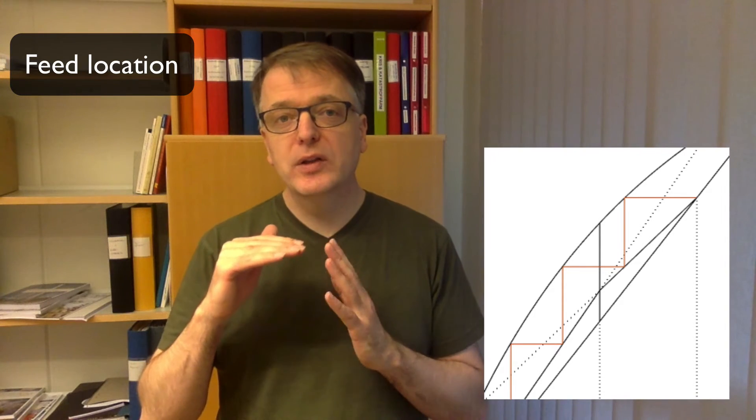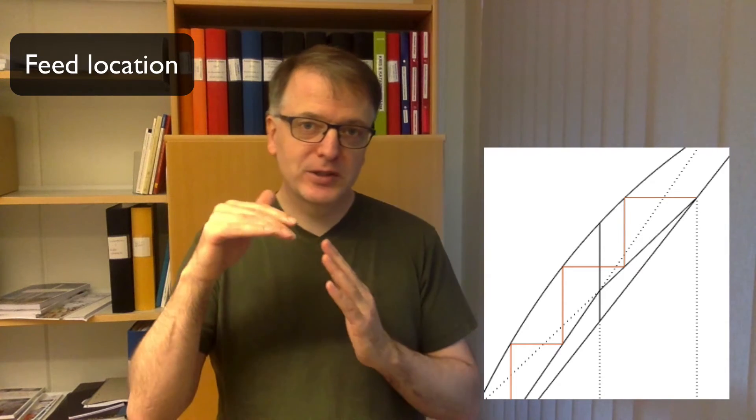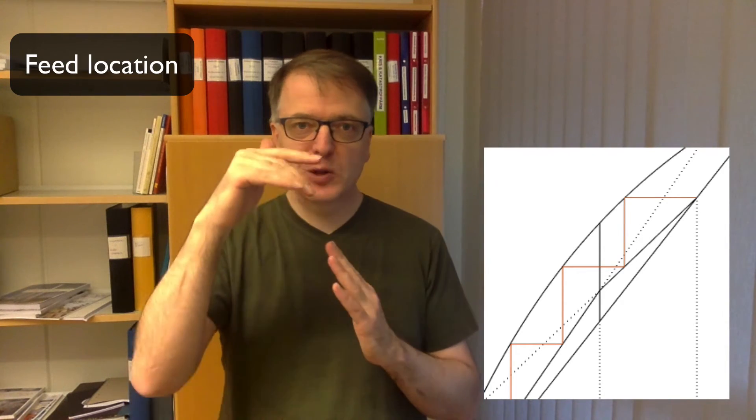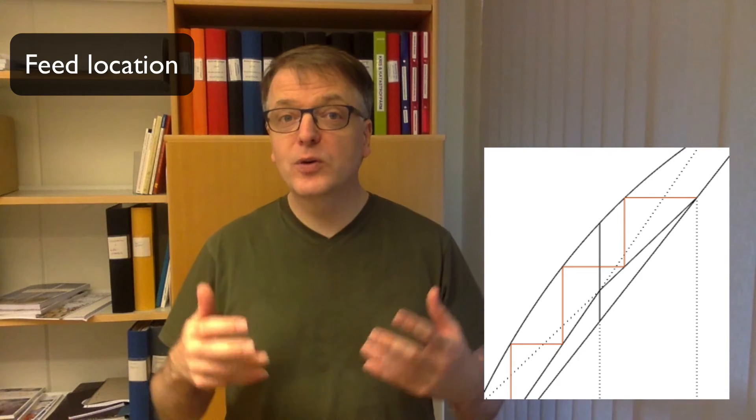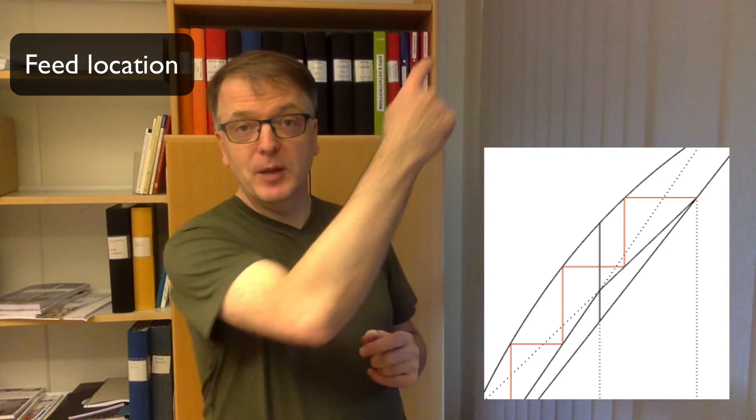Well, after you pass the point where the two operating lines intersect, then it shifts which operating line is closest and which is further away from the system curve. And if you always draw to the line that is furthest away, then you can draw bigger triangles. So when you step from above, as soon as you pass over the point where the two operating lines intersect, you shift to drawing the line to the lower. So from that you get the optimal feed location.